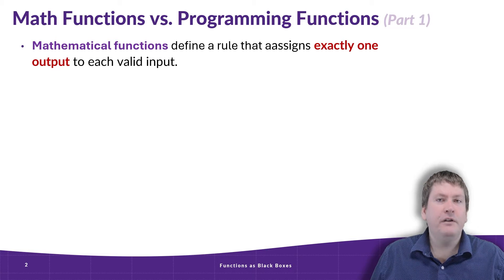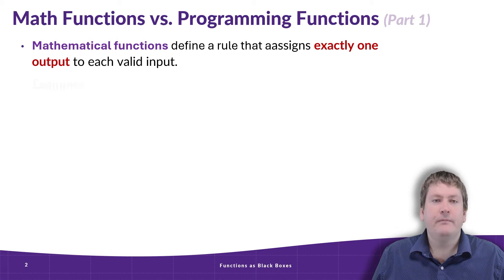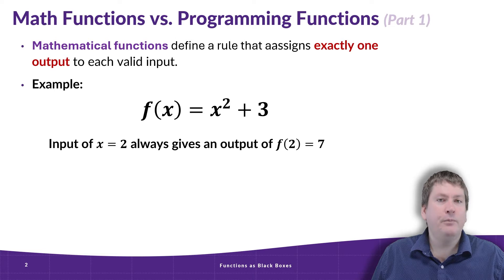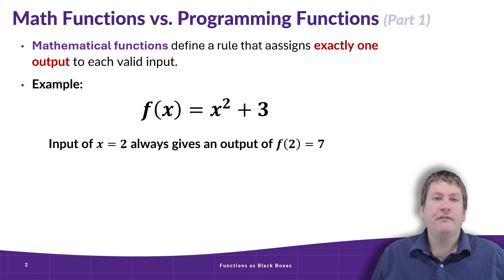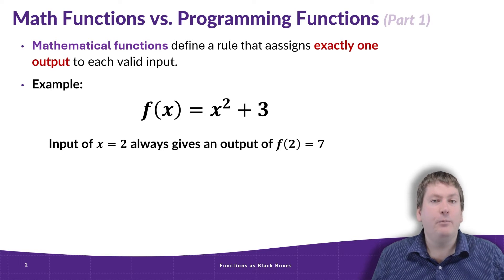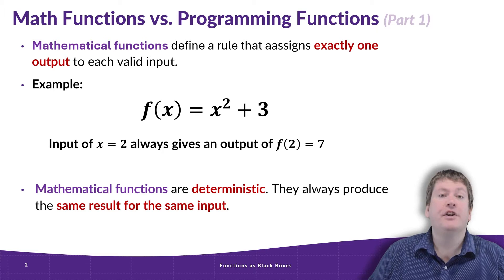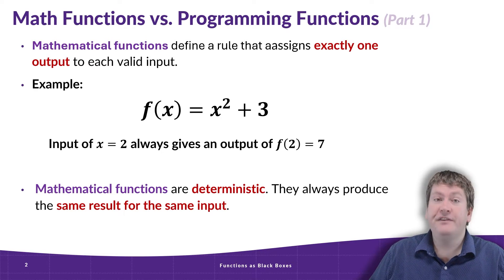Mathematical functions define a rule that assigns exactly one output to each valid input. For example, we might have a function like f(x) = x³ + 3. With a mathematical function like this, an input of x = 2 is always going to give us the same output, in this case 7. Mathematical functions are deterministic. That means they always produce the same result for the same input.